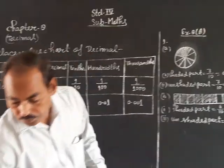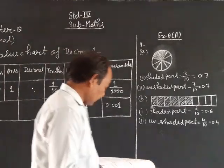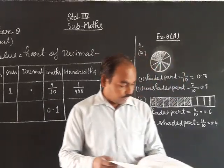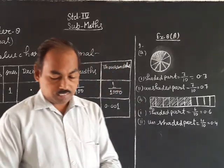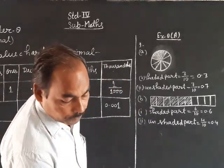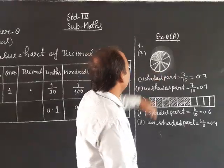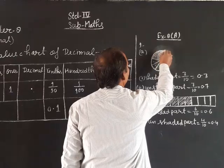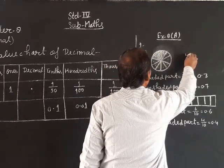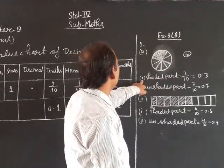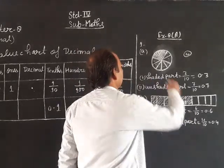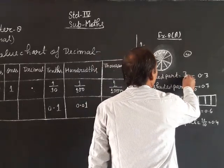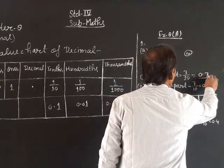Exercise, question number 1: write the shaded and unshaded part of the following figures in fraction and decimal fraction. Here we have figure 3, a circular figure with 1, 2, 3, 4, 5, 6, 7, 8, 9, 10 — total parts is 10. Shaded parts: 1, 2, 3. So 3 upon 10 means 0.3, answer.